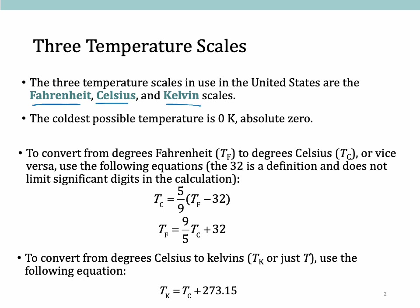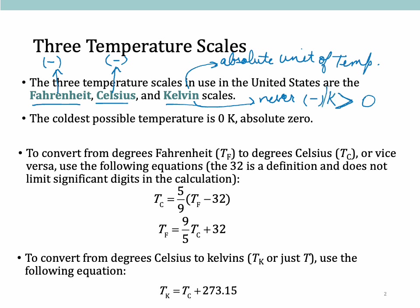Kelvin is called the absolute unit of temperature. Fahrenheit and Celsius can go negative, but Kelvin can never be negative. It will always be greater than zero.